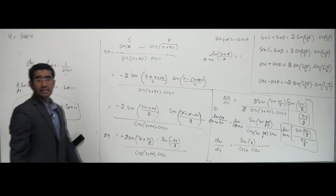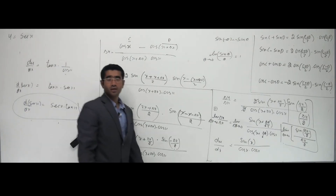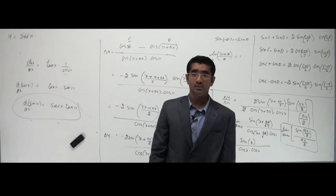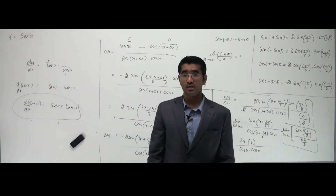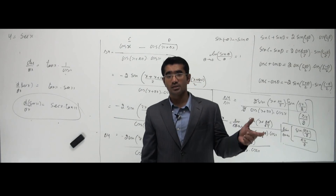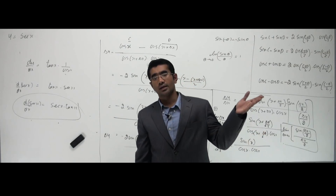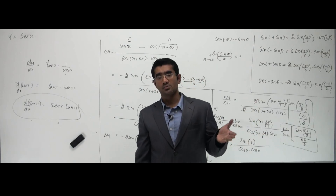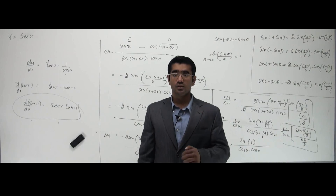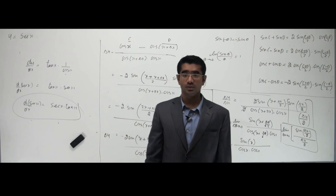Similarly, we can find d/dx of cosecant x. If y equals cosecant x, the answer for dy/dx will be minus cosecant x times cot x. Try it yourself, or watch the next video.